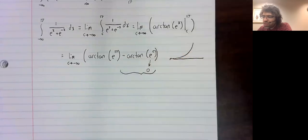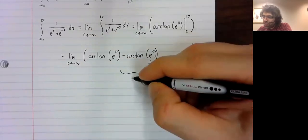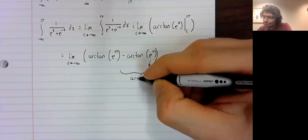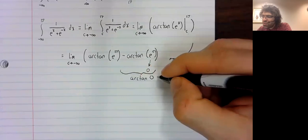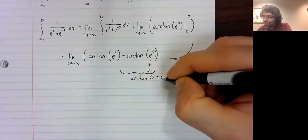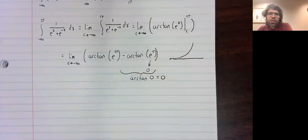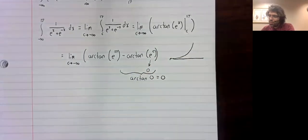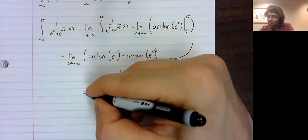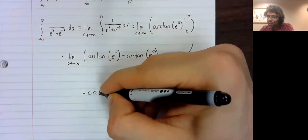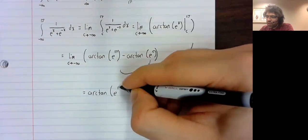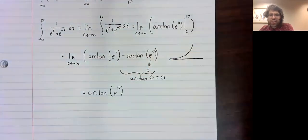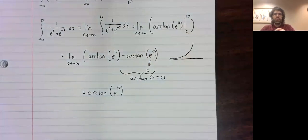And this entire thing, therefore, is going to the arc tangent of zero, which equals zero. So we're left with the arc tangent of E to the 17th, whatever that might be.